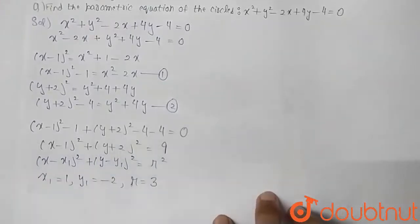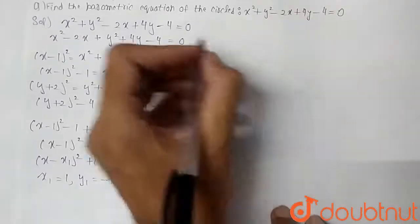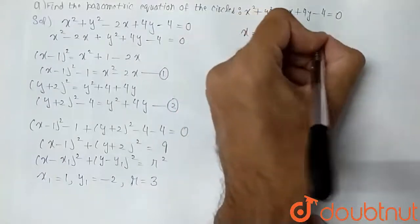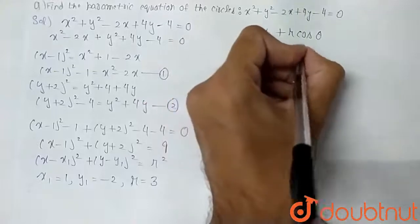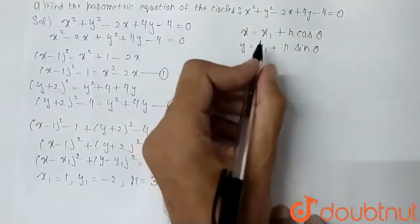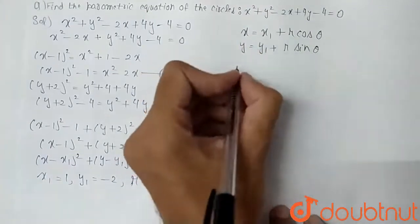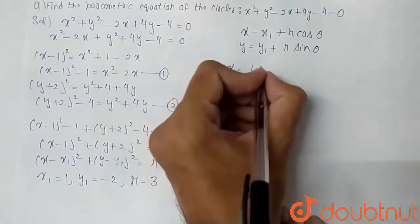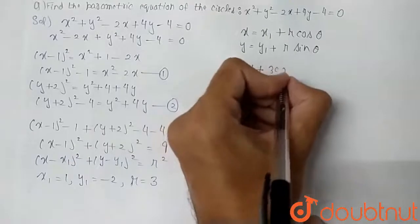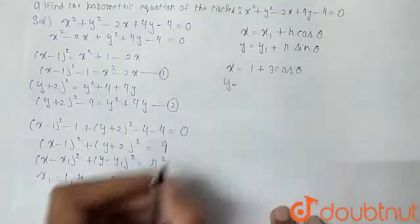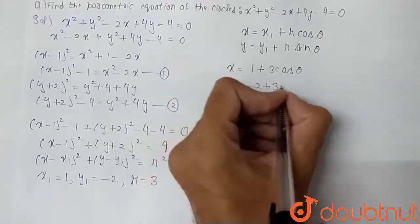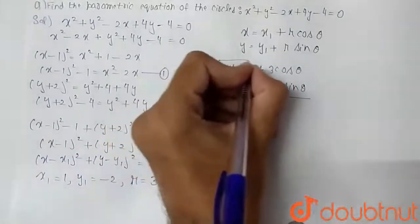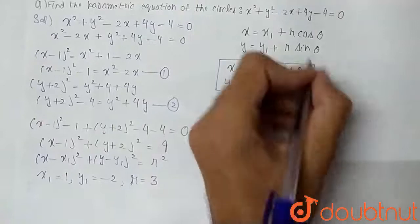Now we write the parametric equations: x = x₁ + r·cosθ and y = y₁ + r·sinθ. Substituting our values, we get x = 1 + 3cosθ and y = -2 + 3sinθ. These are the parametric equations of the given circle.